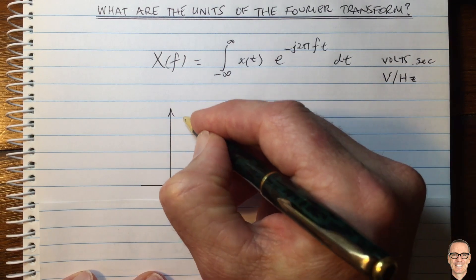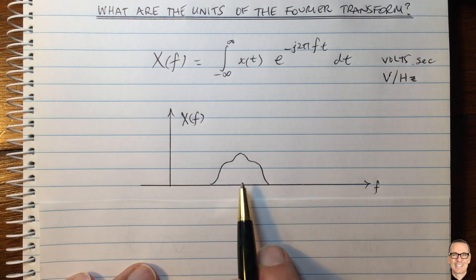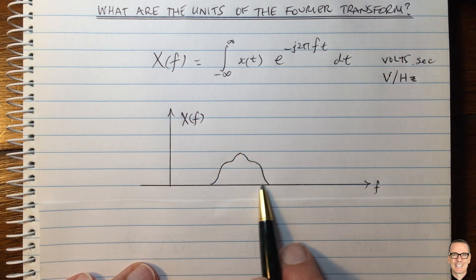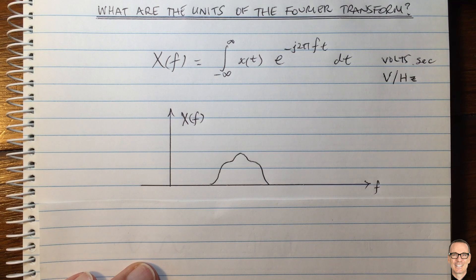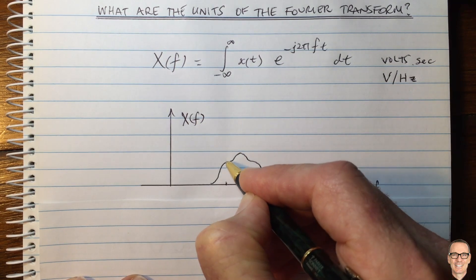So here's an example of a Fourier transform. We're just looking at the positive frequencies of the Fourier transform. And let's think about what this actually means to us when we see something like this. Well, what does this height actually mean?